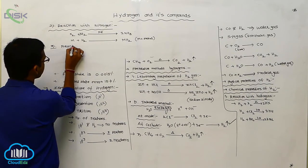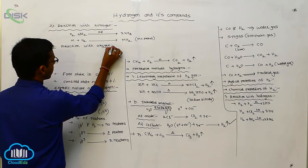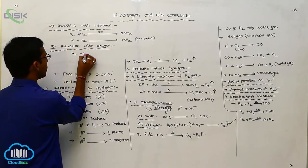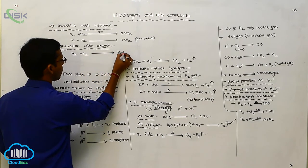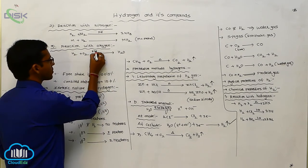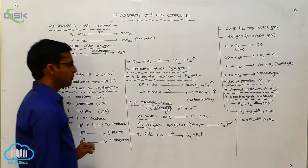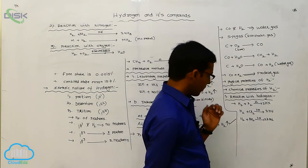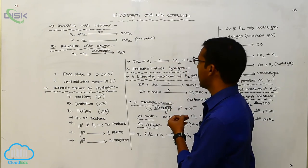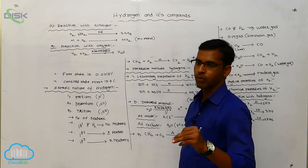The third reaction is with oxygen. Hydrogen reacts with oxygen to produce oxides — that is the water molecule: H₂ + O₂ gives H₂O through electrolysis. So: reaction with halogens gives halides, reaction with nitrogen gives hydrides, reaction with oxygen gives water molecule.